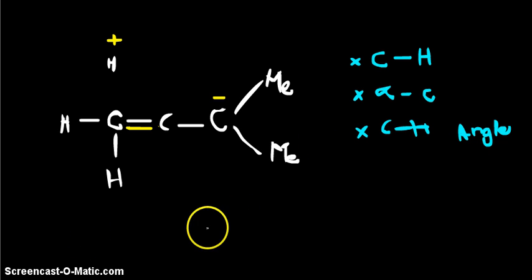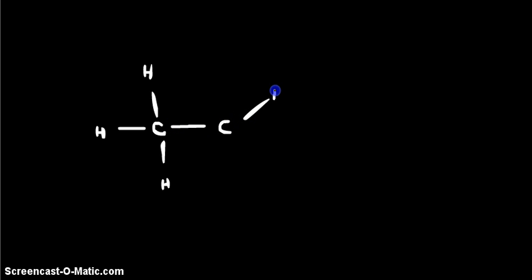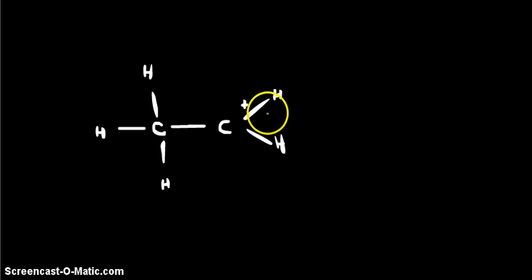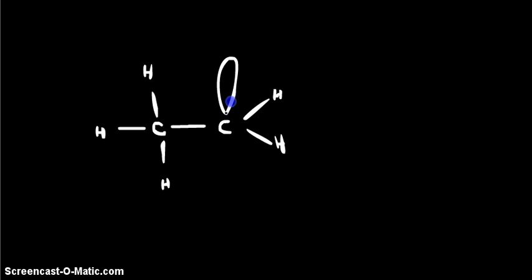So I'll just explain with another example. I'll draw a new structure: C, C with H, H, H and another C with H, H, H — and this carbon has a positive charge. A positive charge means it has empty orbitals — p orbitals actually. So let's draw those empty orbitals.